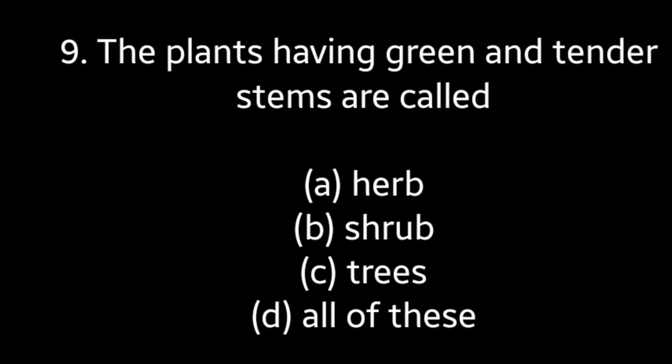Question number 9: The plants having green and tender stems are called Herb, Shrub, Trees, or All of these. Answer is option A, Herb.